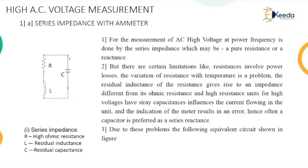In the measurement of high AC voltage, there are five different methods. Whenever we need to do the measurement of high voltage, that voltage is to be reduced to a value so that a meter — maybe a voltmeter or ammeter — can do the measurement. High value voltmeters and ammeters are difficult to manufacture, so we generally reduce the value of the voltage.